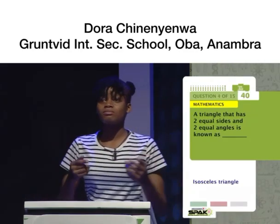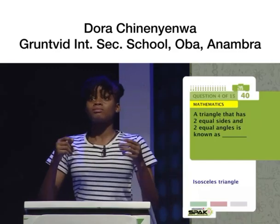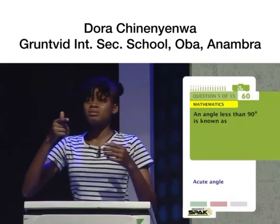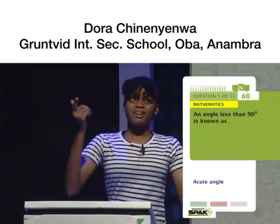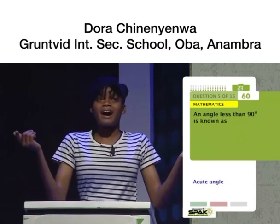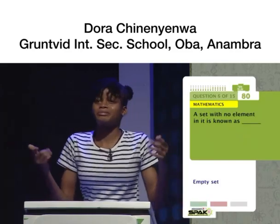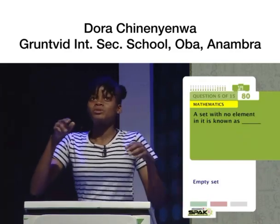A triangle that has two equal sides and two equal angles is known as? An angle less than 90 degrees is known as? A set with no element in it is known as? No.